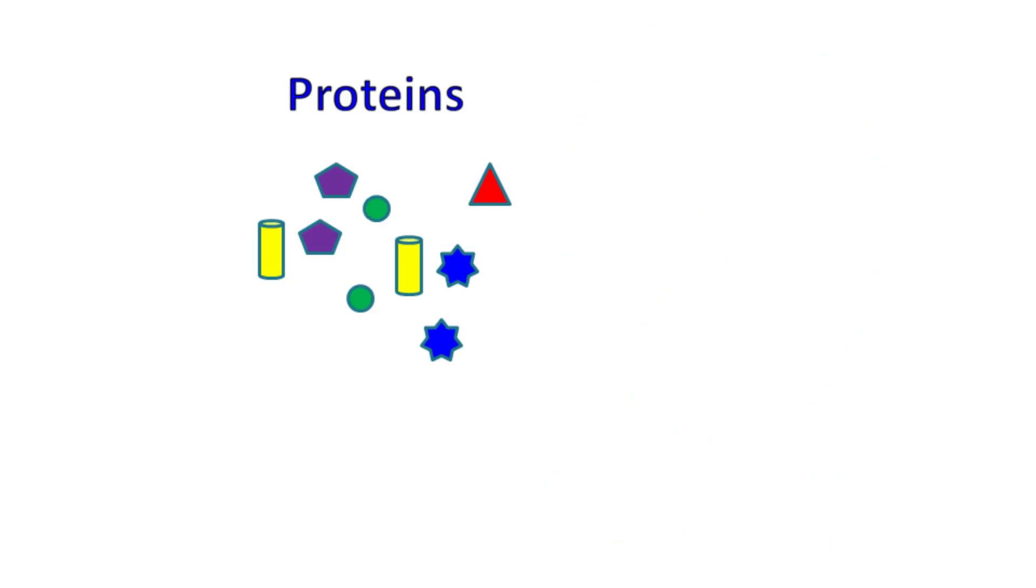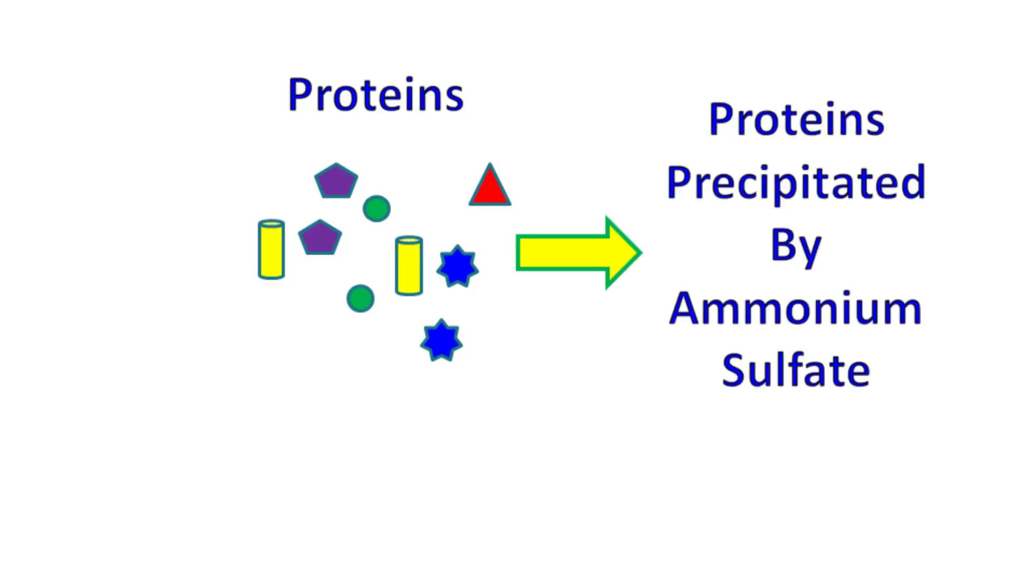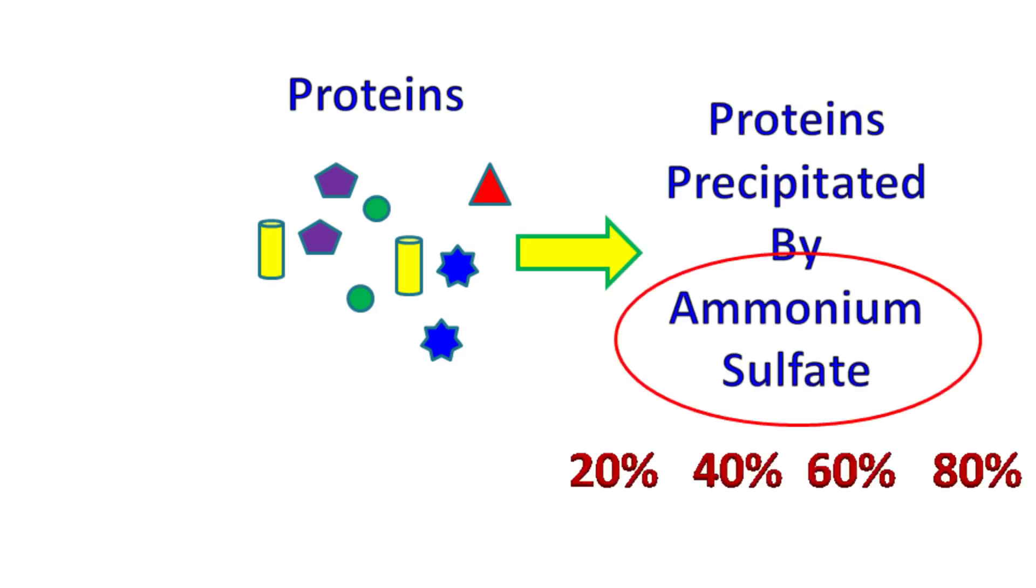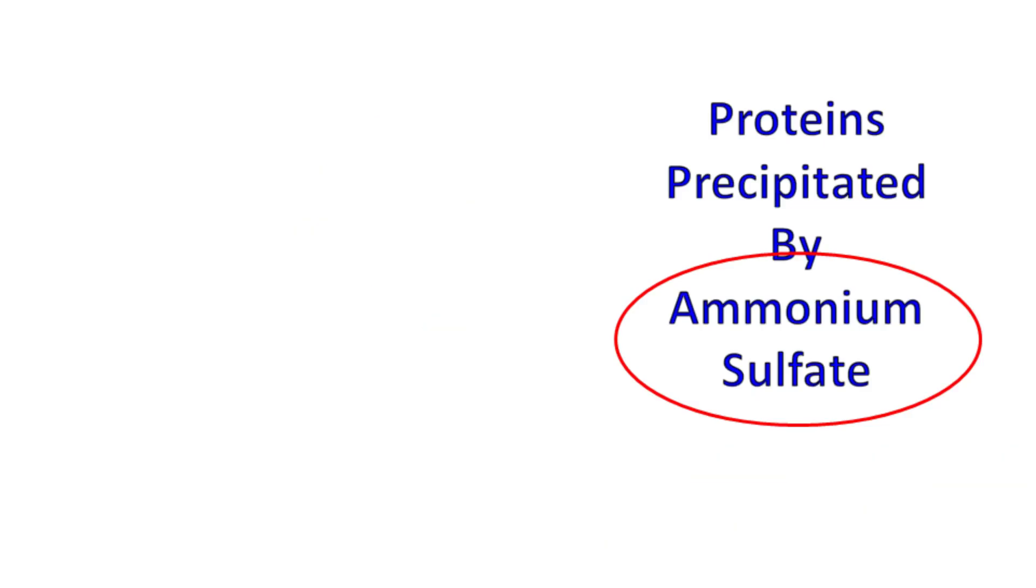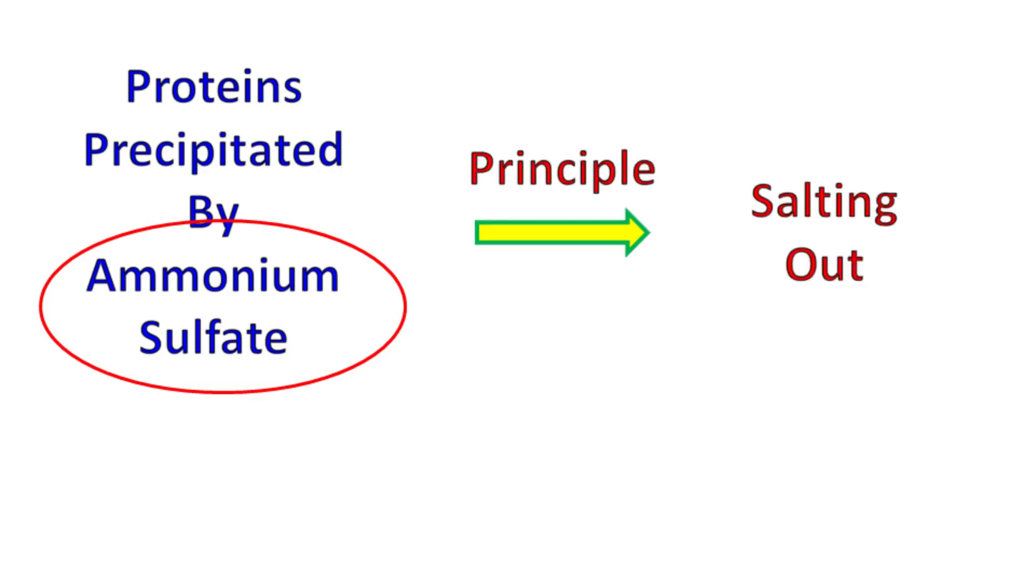This mixture of proteins can be precipitated by ammonium sulfate. By using a range of concentration in an increasing order, different proteins present in the cell can be precipitated. This phenomenon by which the proteins get precipitated is known as salting out.